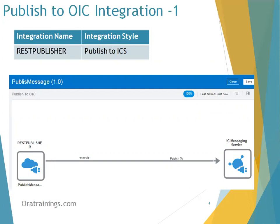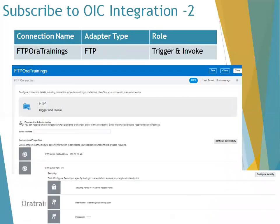The next thing is the integration itself — the integration style we consider is Publish to OIC or ICS, and the integration name is REST Publisher. The REST Publisher is the REST integration I've connected to the messaging platform. This is the first integration. The next integration is Subscribe to OIC, which is the second integration, and for that we require one FTP connection.